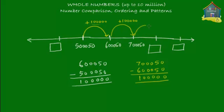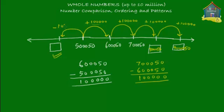Adding 100,000 to 700,050 gives 800,050. Adding another 100,000 gives 900,050 for the next blank. On the other side, moving from right to left, you subtract 100,000 to get 400,050. So going left to right you add 100,000, and going right to left you subtract 100,000.